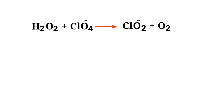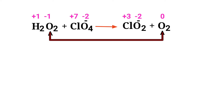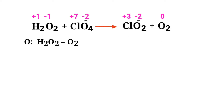Figure out the reducing and oxidizing agents by the rules of assigning oxidation numbers. In the Ion Electron Method, one reaction is divided into two half reactions. Oxygen has a charge of minus 1 and is changing to 0, so oxygen is being oxidized. Chlorine has a charge of plus 7 and is changing to plus 3, so chlorine is being reduced.